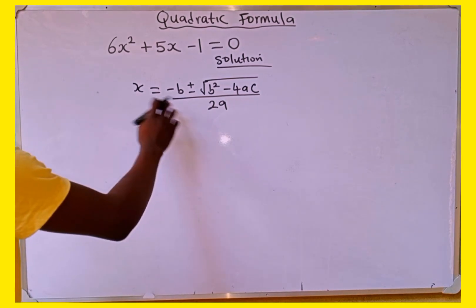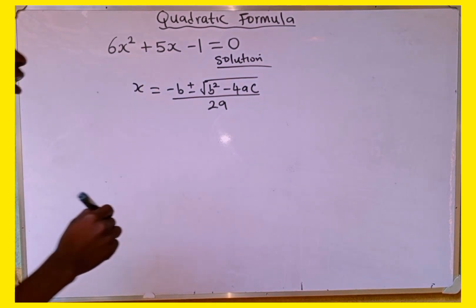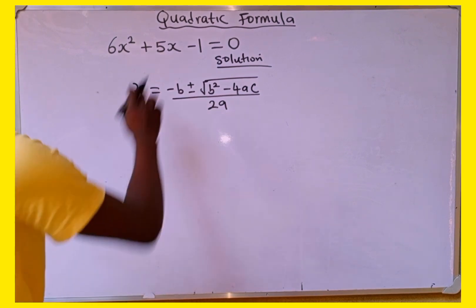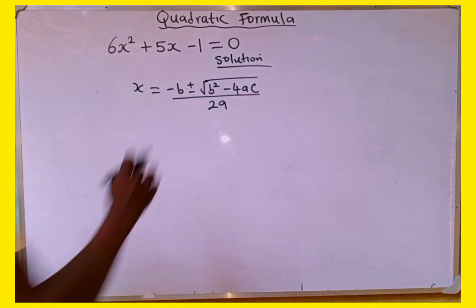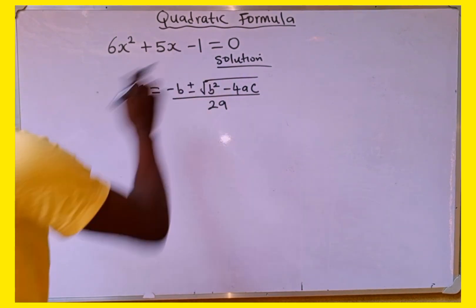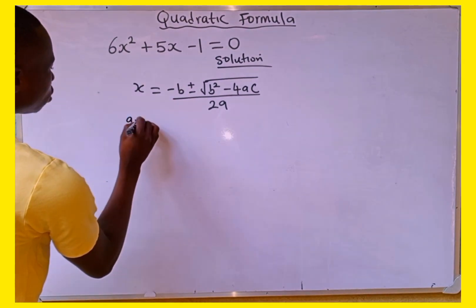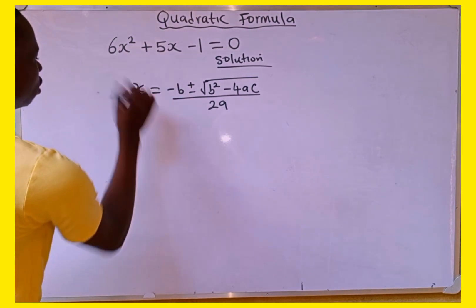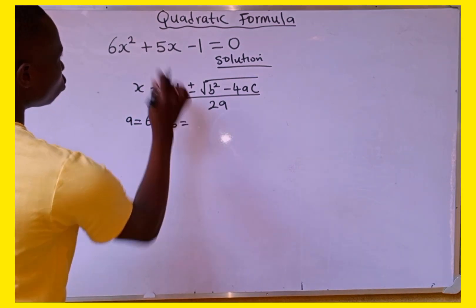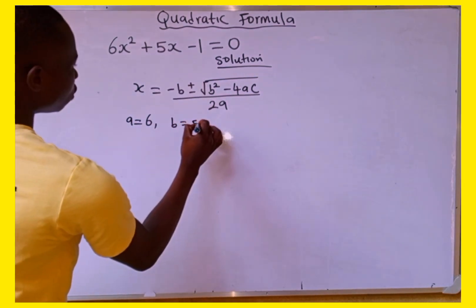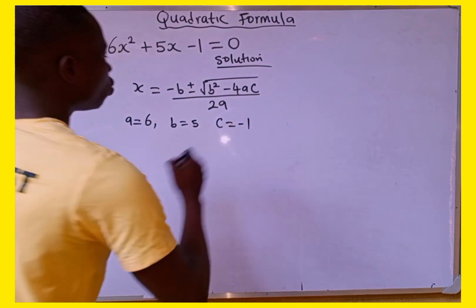From the given quadratic equation, a is the coefficient of x squared, which is the leading coefficient. B is the coefficient of x, which is the middle term. C is the constant, which here is minus 1. So a equals 6, b equals 5, and c equals minus 1.